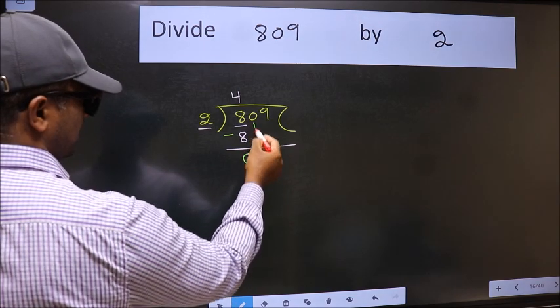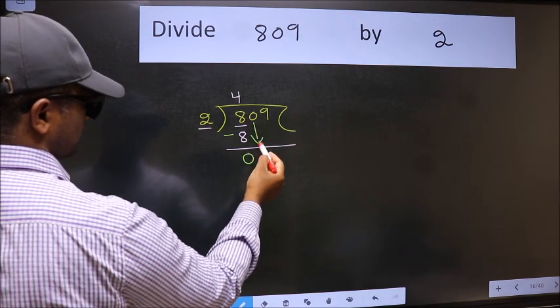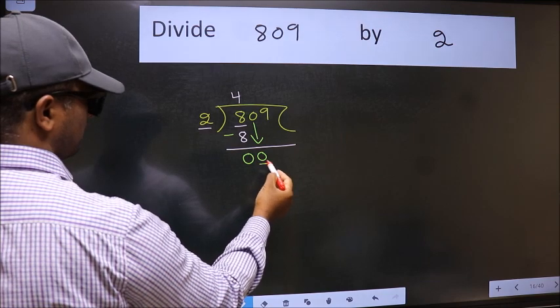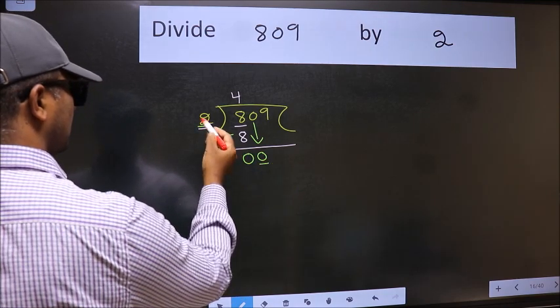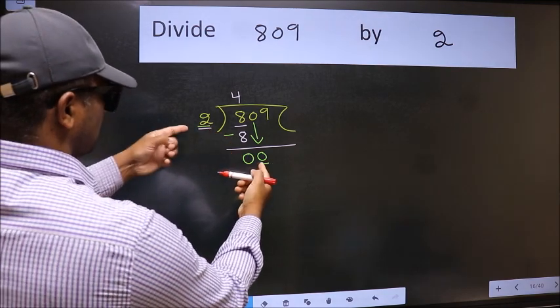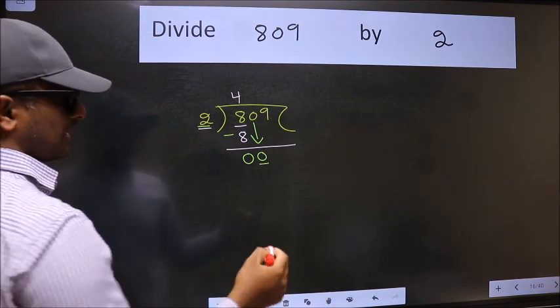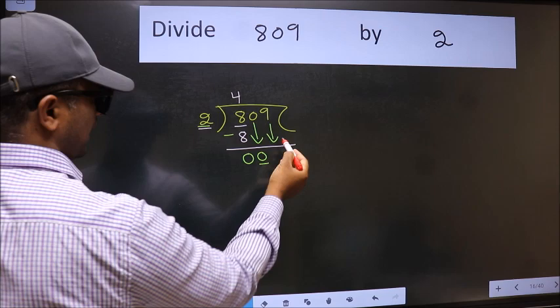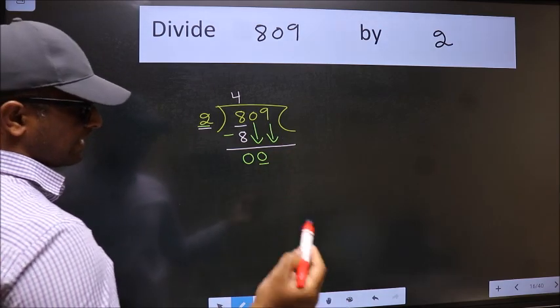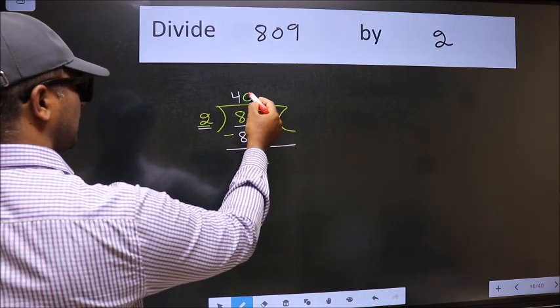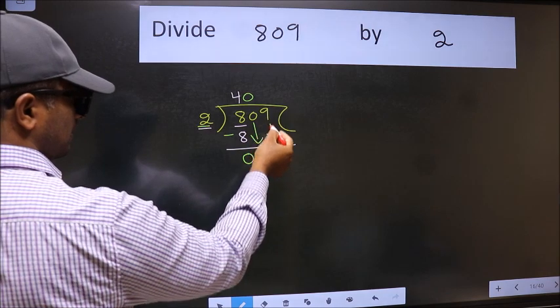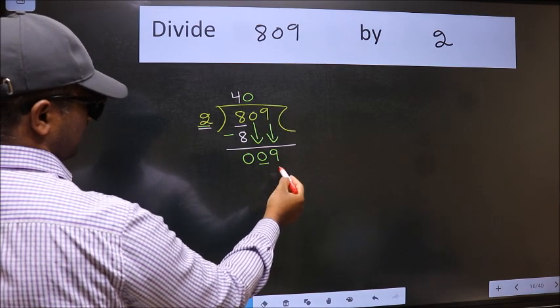After this bring down the beside number. So 0 down. Now here we have 0 and here 2. 0 is smaller than 2. So we should bring down the second number. And the rule to bring down the second number is we should put 0 here. Then only we can bring this number down. Now 9.